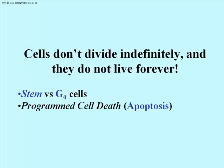Cells don't divide indefinitely, but they also don't live forever. When they die, they can be replaced by stem cells. As an example, our red blood cells function even without nuclei for about 60 days before they're removed by the spleen. They're constantly replaced by stem cells in our bone marrow.